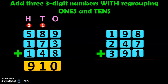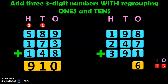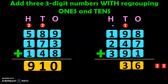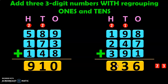Let us do another example: 198 plus 247 plus 391. Add the digits in the ones place: 8 plus 7 is 15, and 15 plus 1 is 16. Retain 6 in the ones place and carry over 1 to the tens. 1 plus 9 is 10, 10 plus 4 is 14, and 14 plus 9 is 23. Retain 3 in the tens place and carry over 2 to the hundreds. 2 plus 1 is 3, 3 plus 2 is 5, and 5 plus 3 is 8. So, the sum of these three-digit numbers is 836.